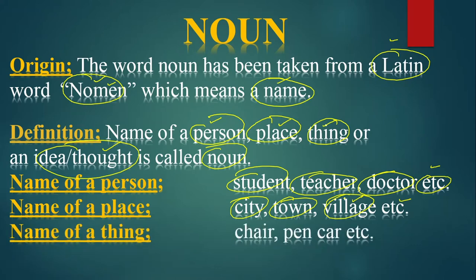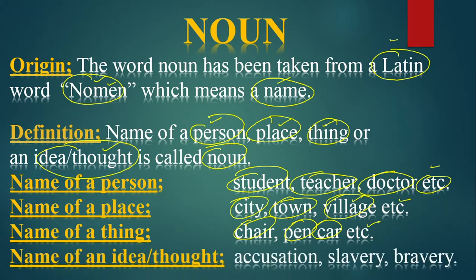The third category is the name of a thing. Things are also called nouns — for example, a chair, which is used for sitting; a pen, which is used for writing; a car, which is used to go from one place to another. These are names of things, and noun covers name of a person, place, and thing.